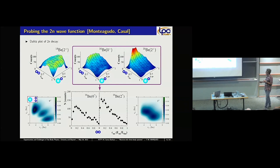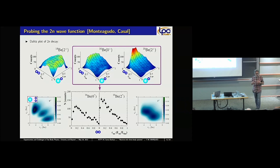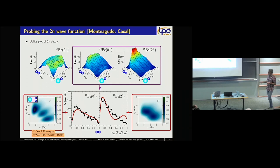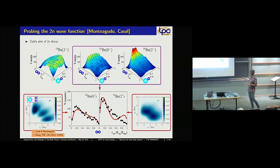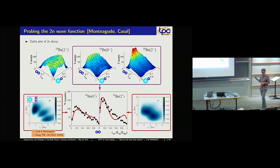Looking at the Dalitz plot of the decay — neutron-neutron energy versus beryllium-14–neutron energy — both the ground state and the 2+ state show a strong signal at low neutron-neutron energies, but the 2+ signal is stronger even though its wave function has no di-neutron component. So you cannot simply say that a low-energy neutron-neutron signal corresponds to a di-neutron component in the wave function. Jesus calculated the time-dependent wave function and projected the asymptotic part to predict what energies we measure, showing a strong signal can appear even without a di-neutron component.